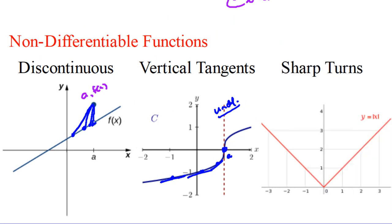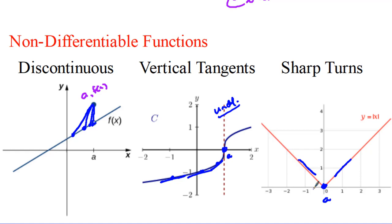We can also say that at sharp turns a function is not differentiable. The idea that 'if it's continuous, it must be differentiable' is not true. This function is totally continuous, but as we approach point a — point 0 — from the left side, the slopes are all negative, and from the right side the slopes are all positive. So what is the slope right here at this sharp turn or cusp? It's not differentiable, because the slopes from the left and right don't converge at the same value.